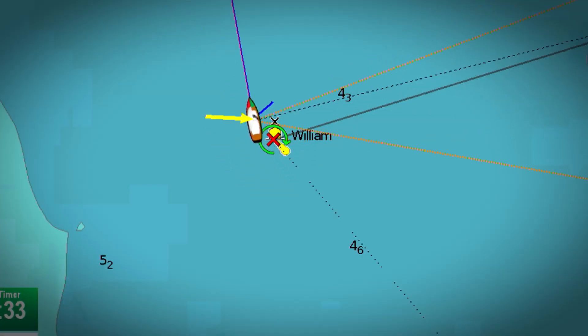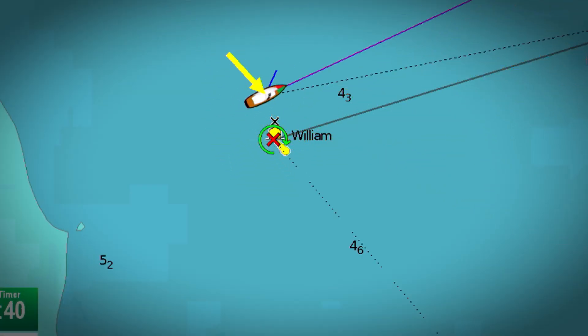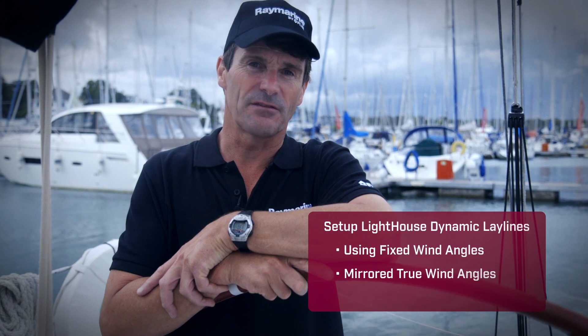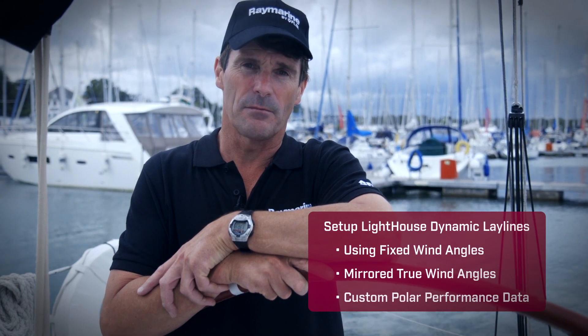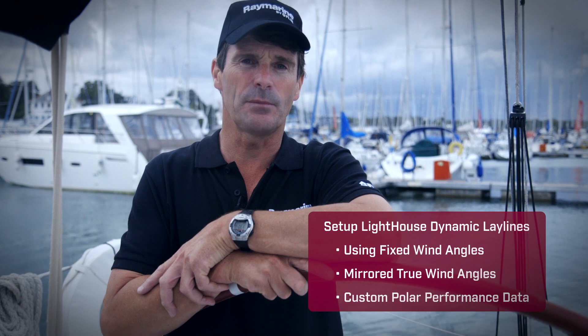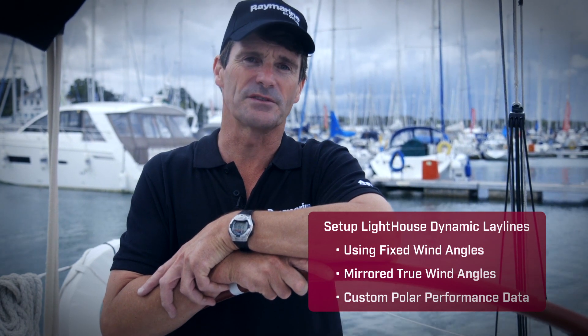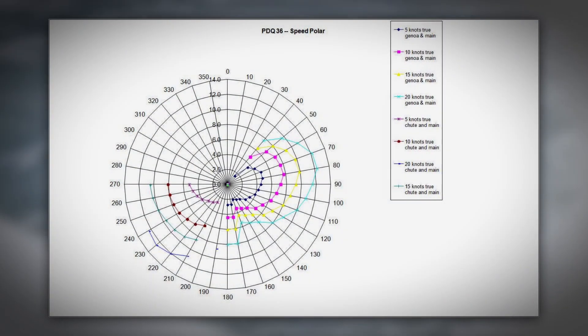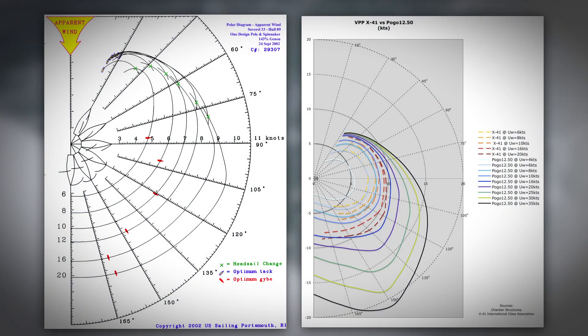Sailing downwind, the Lay Lines change to orange and show the best angles to sail downwind and achieve maximum speed. You can set up Lighthouse Dynamic Lay Lines using fixed wind angles, mirrored true wind angles, or you can even import polar performance data for your boat. Polar performance data for almost every sailboat is available from the boat builder or from the boat's racing class association.